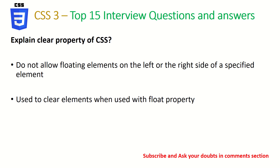Explain the clear property of CSS. In the previous question we learned about float. Whenever you float an element, whatever elements follow will also start going in the same direction. To stop that behavior so that elements flow naturally from there on, we use the clear property. We can specify the side — clear left, clear right, or clear both.